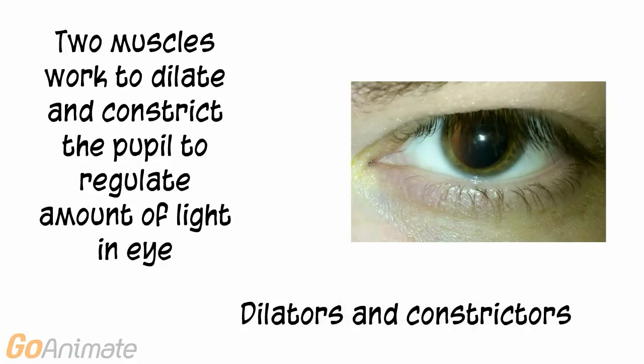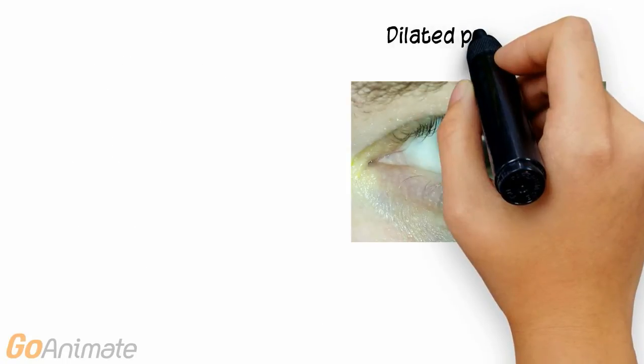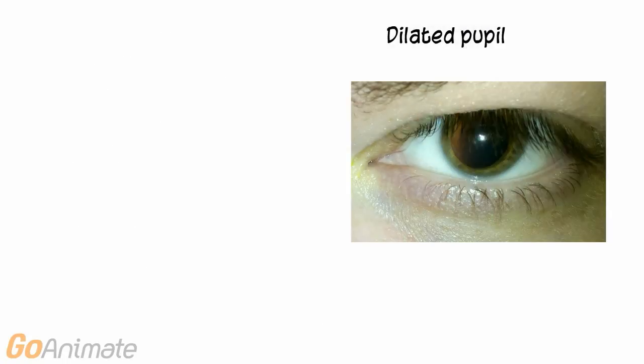The optic disc contains no photoreceptors, so it produces a blind spot. Two muscles work to dilate and constrict the pupil — these are called dilators and constrictors, and they respond to light intensity and autonomic nervous system stimulation.